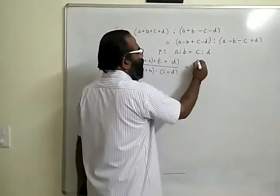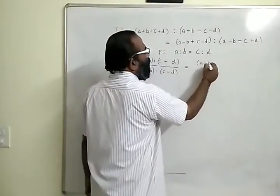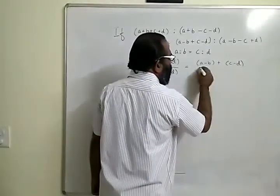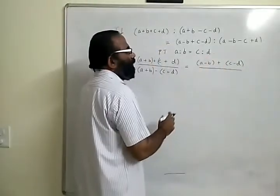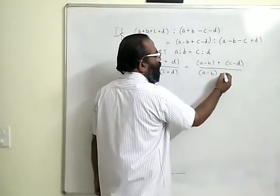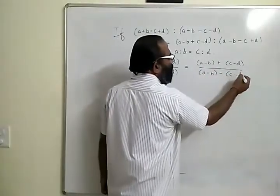This is equal to a minus b plus c minus d. Here too we are bracketizing it. And then here we have a minus b minus of c minus d. When I take the minus out, this minus c plus d becomes c minus d.